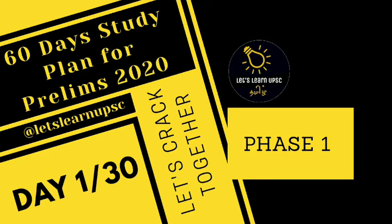You have started the current affairs process — you will cover the monthly numbers and work through them step by step.